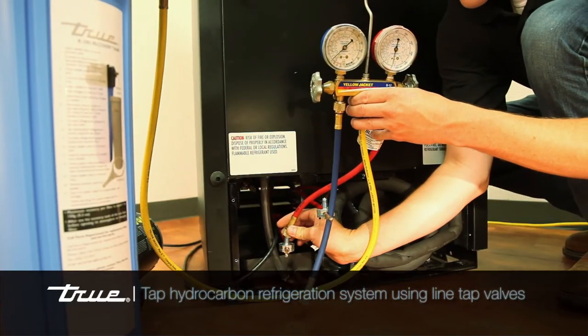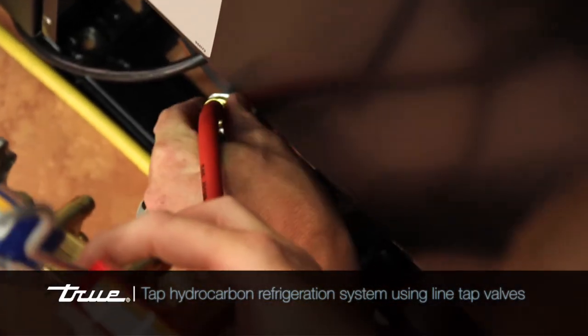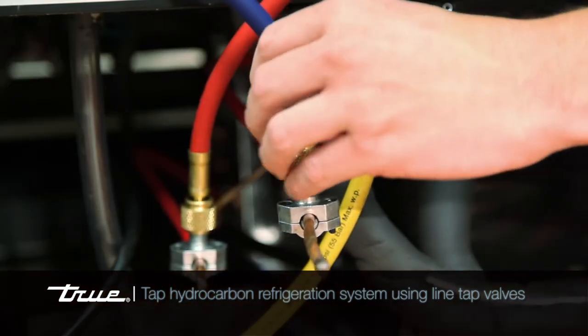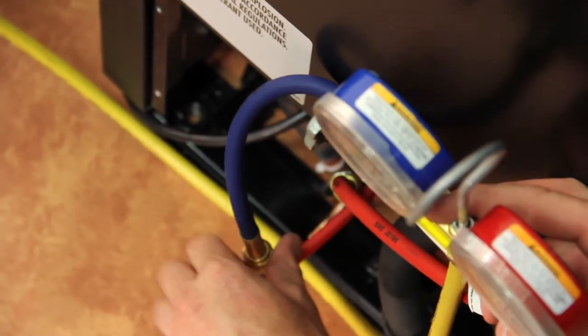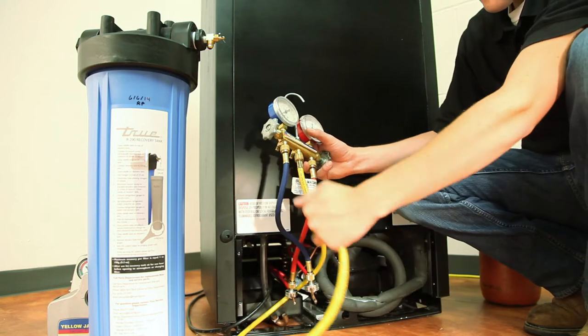You will then tap the system using piercing valves and connect your refrigeration gauges to the high and low sides of the system, and also the recovery tank as shown.